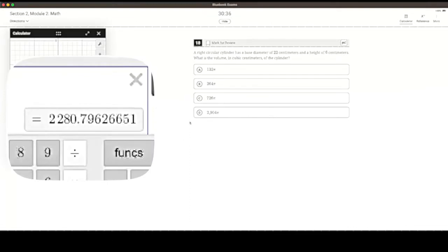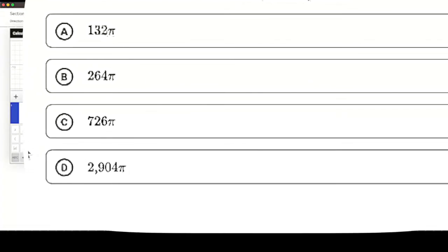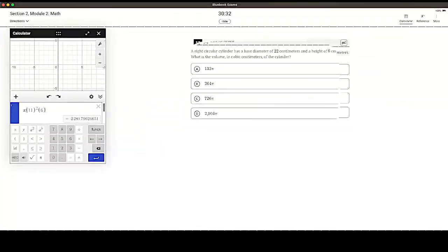And we got this number that doesn't really work out, but you can see in all the answer choices, pi is a part of the answer. So we remove pi, and beautiful, we got 726.